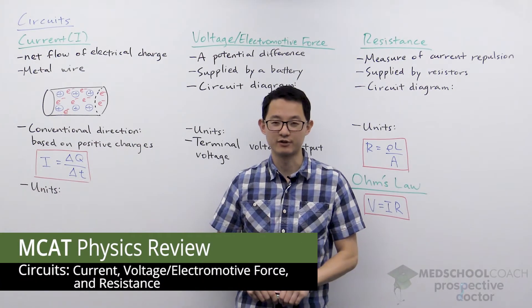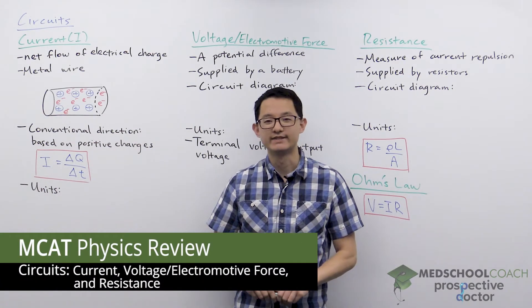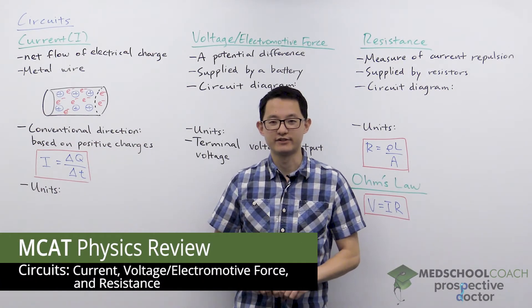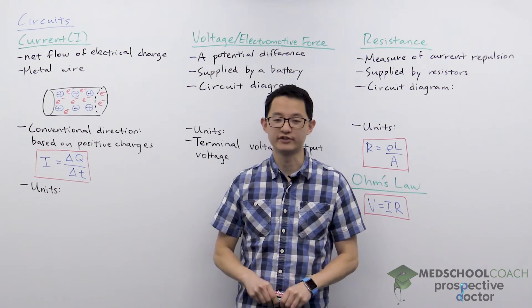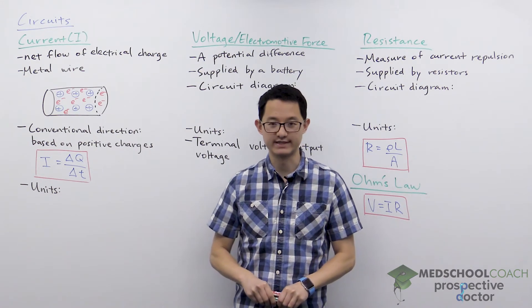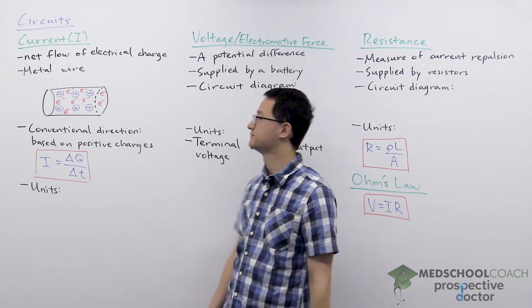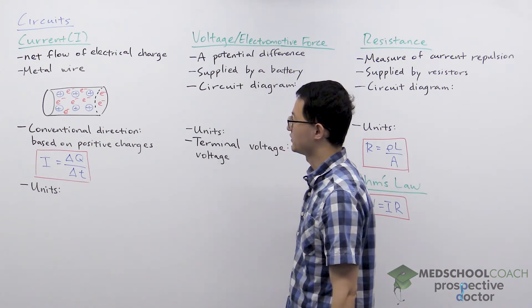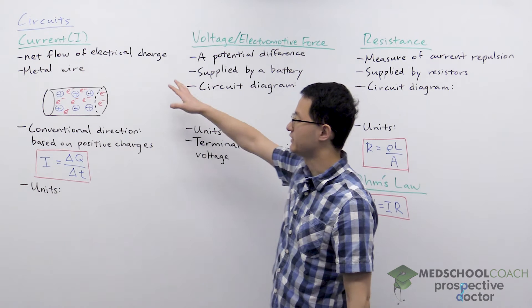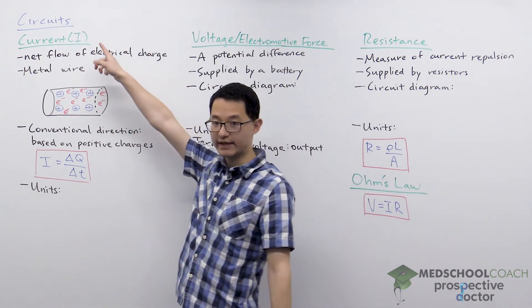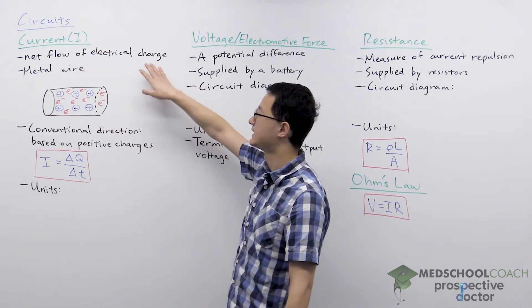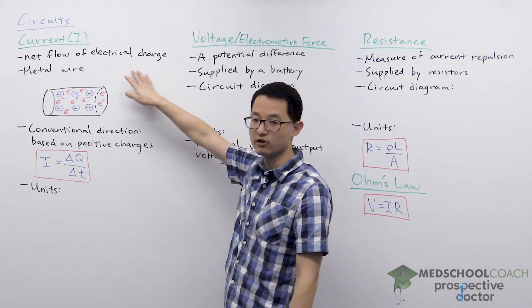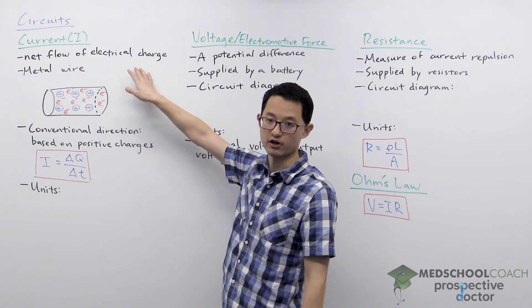In the next few videos we're going to go over circuits. This video is going to talk about current, voltage, and resistance. So first of all, current, which is denoted by capital I, can be defined as the net flow of electrical charge.